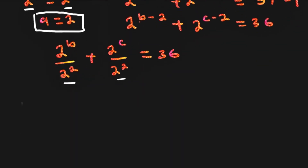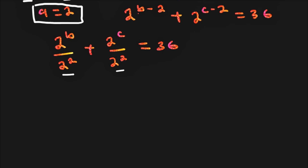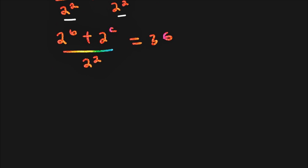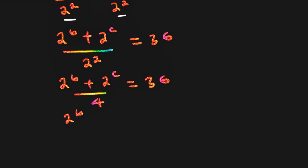So on the left hand side we have 2 power b plus 2 power c over 2 power 2, which equals 36. Since 2 power 2 is 4, we can say 2 power b plus 2 power c over 4 equals 36. We cross-multiply, and 4 times 36 is 144. So we have 2 power b plus 2 power c is equal to 144.